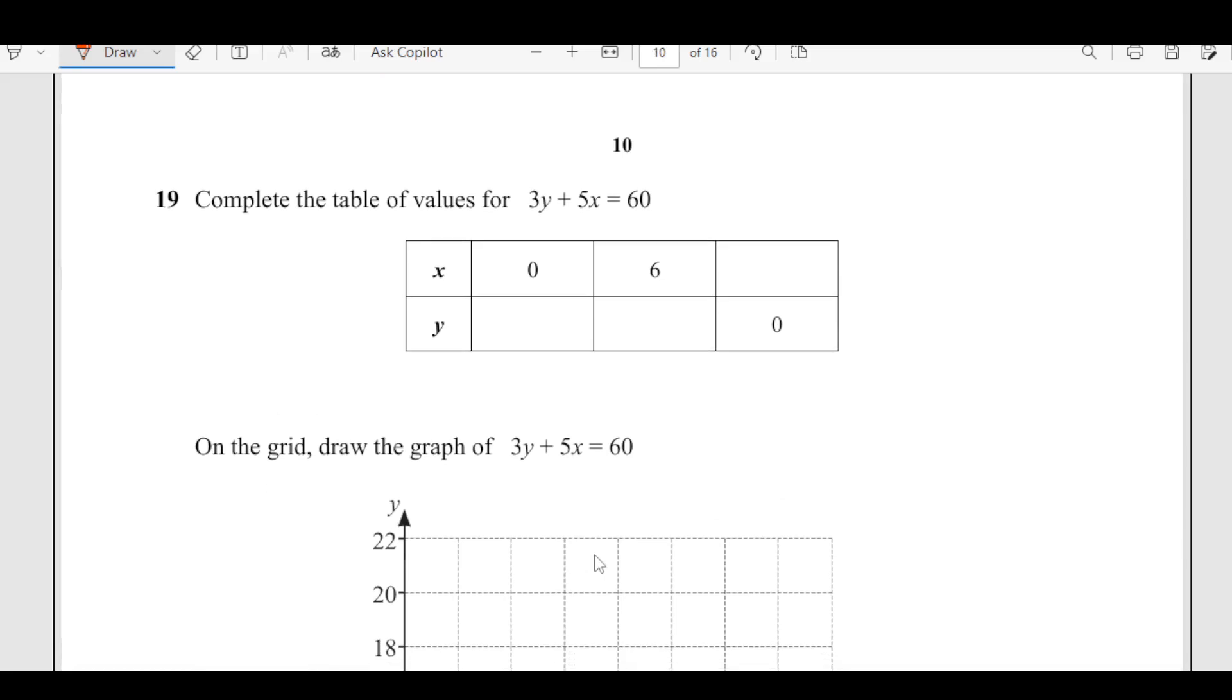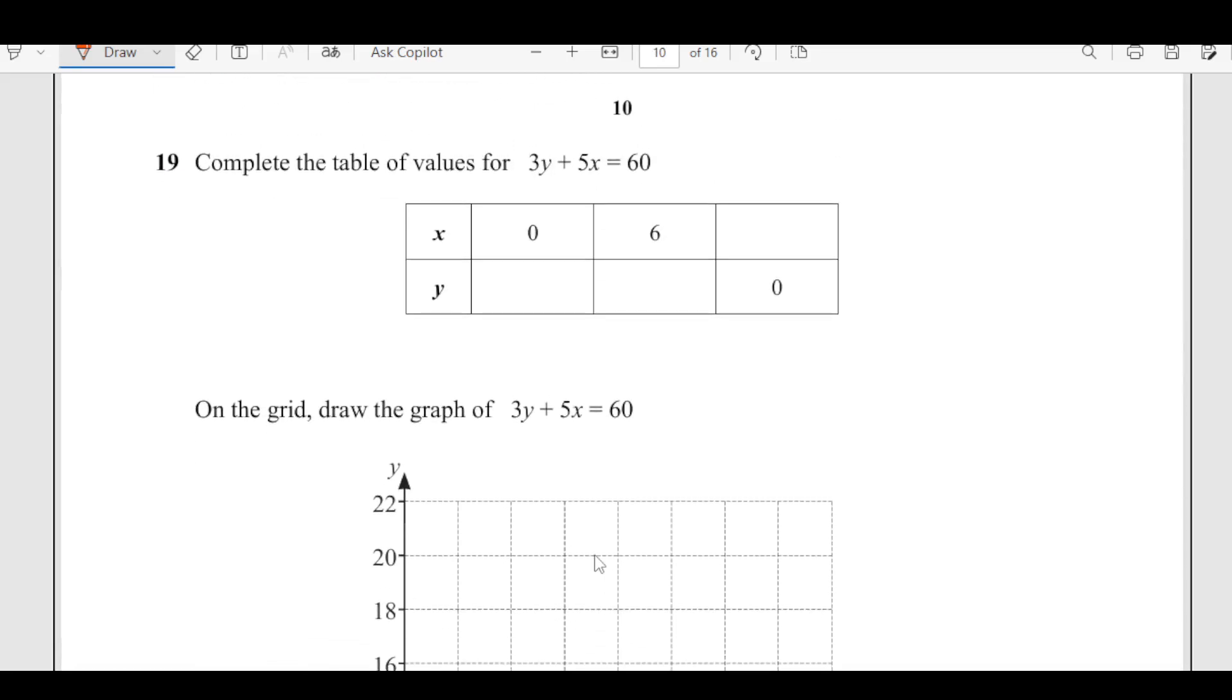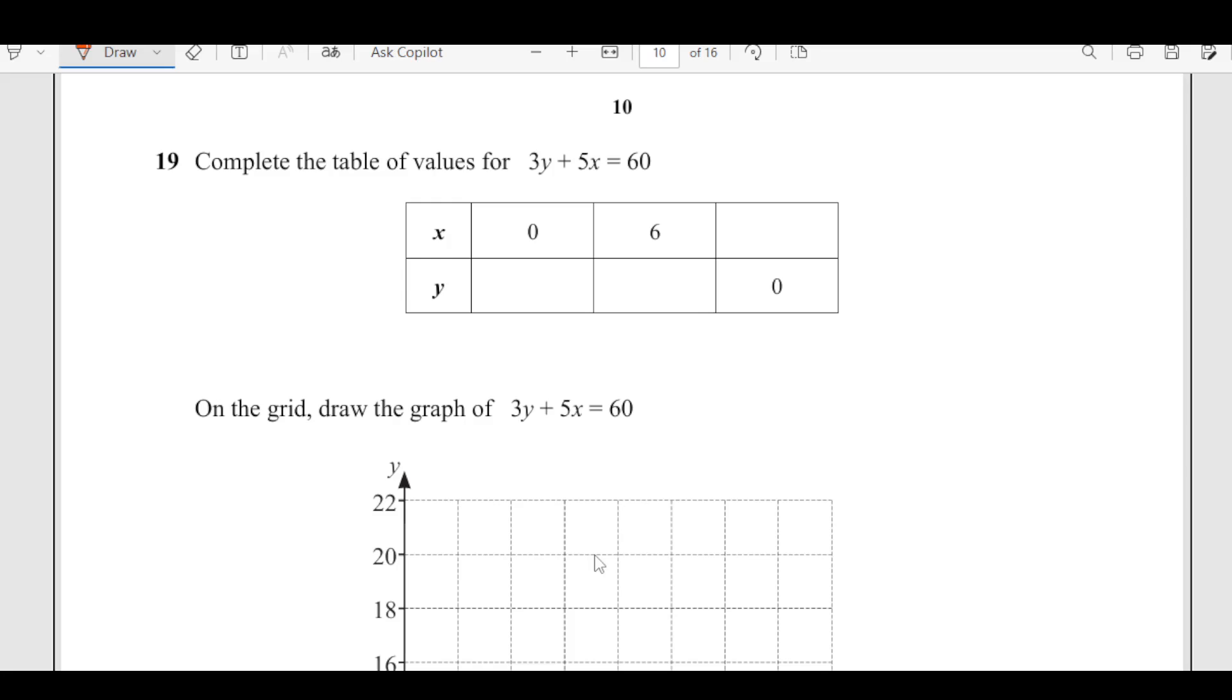The next one, complete the table of values for 3y plus 5x equals 60. When x is 0, this term is going to be 0, so 60 divided by 3, it is going to be 20. When x is 6, 3y plus 5 times 6 equals 60, then 3y equals 60 minus 30 which is 30, 3y divided by 3, so this is 10.